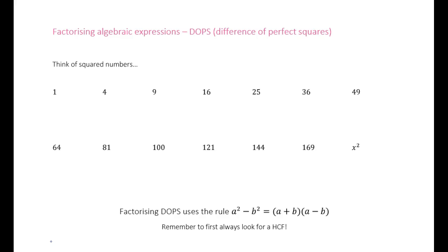Continuing on with our lessons in algebra, we're going to be looking at a new type of factorization which, like last lesson, results in a double set of brackets. This is going to be called factorizing algebraic expressions using DOPS, and DOPS stands for difference of perfect squares.